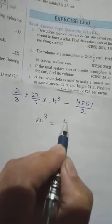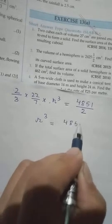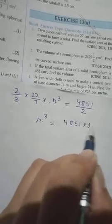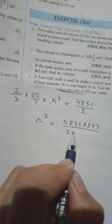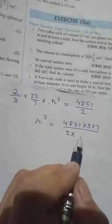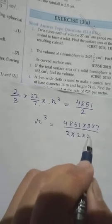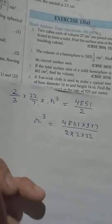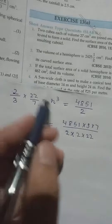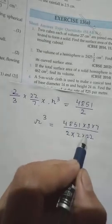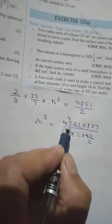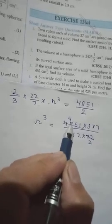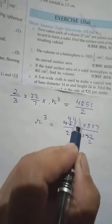So r³ will be equal to 4851 × 3 × 7 divided by 2 × 2 × 22. Let us try to divide up and down by the same number. If I do with 11, 2 times 11 into 4 is 44, 11 into 4 is 44, 11 is 1.